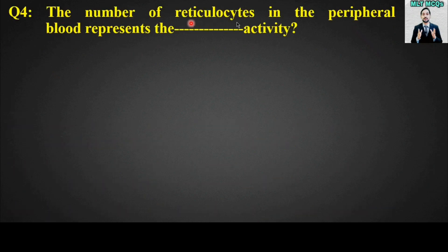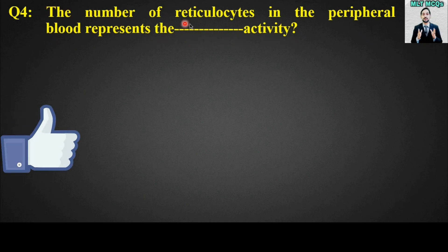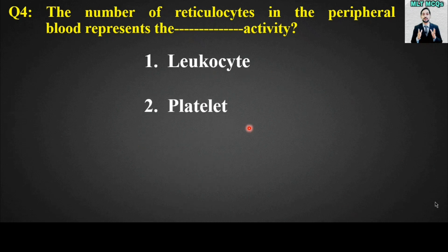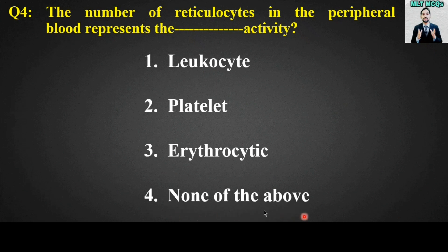MCQ number four: The number of reticulocytes in the peripheral blood represents the blank activity. Options are: leukocytes, platelet, erythrocytic, or none of the above. The right answer is option number three — erythrocytic activity.